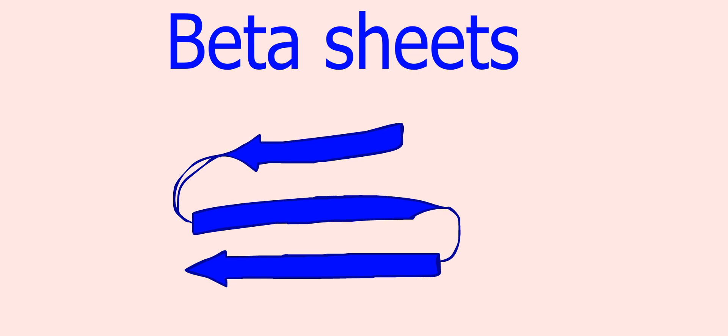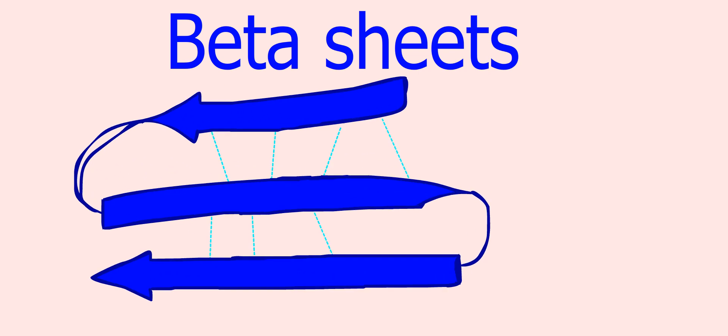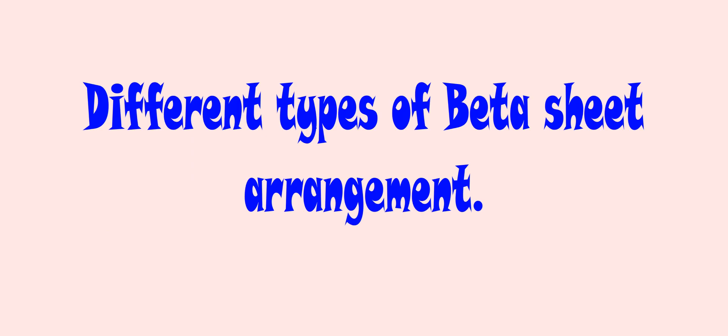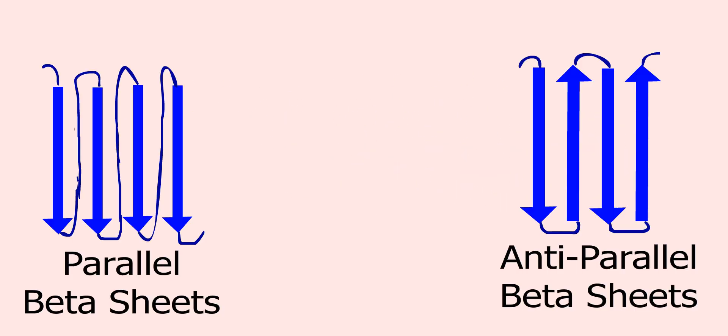Beta sheets. Beta sheets are formed through interstrand hydrogen bonding between beta strands. This means that hydrogen bonds form between amino and carbonyl oxygens in the polypeptide backbones of two separate strands. There are two forms of beta sheets: parallel and anti-parallel.